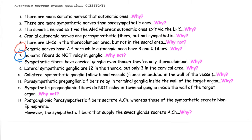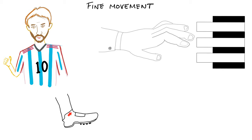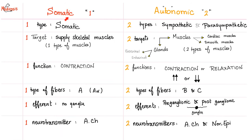Thumb opposition, finger flexion and extension — that's huge, that's specialized, and it requires lots of fibers. Comparison between somatic and autonomic: somatic — everything is one; autonomic — everything is two. Somatic has one type, just somatic. Autonomic has two: sympathetic and parasympathetic.